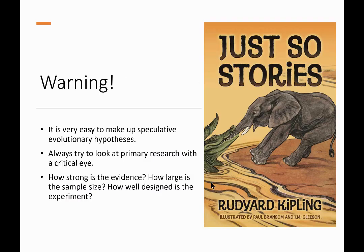With all of these hypotheses, it is very easy to make up speculative hypotheses, look at data, and say this must be clearly what's happening. But we are certainly not providing proof, and sometimes we're not even providing strong evidence that our hypothesis is really true. It's very easy to come up with hypotheses to explain human behaviors without evidence. Always try to look at primary research with a critical eye. How strong is the evidence? How large is the sample size? How well designed is the experiment? Is it separating cultural factors from innate evolutionary behavior?